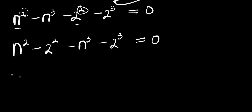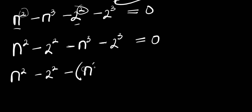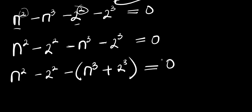Now I can have n² - 2², there is a minus here which I can factor out: minus n³ plus 2³ equals 0. Remember, if you multiply out using this negative, you will have the original expression again.